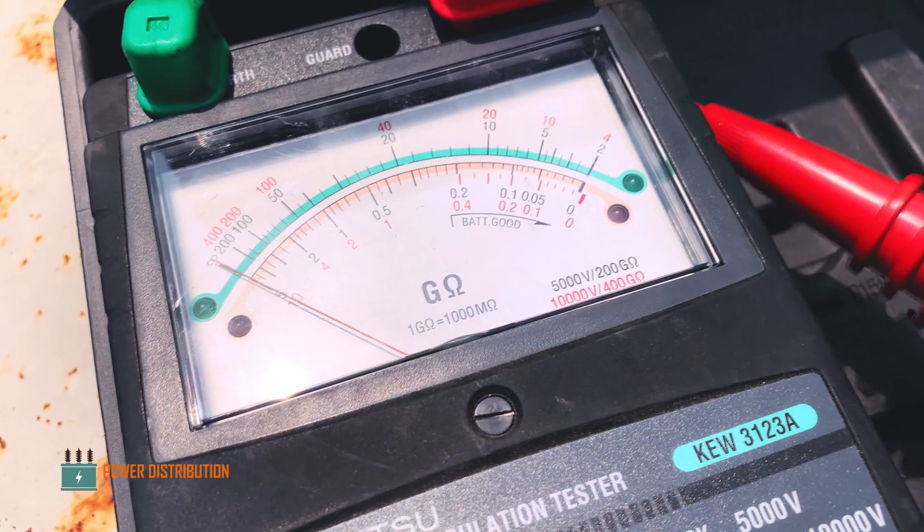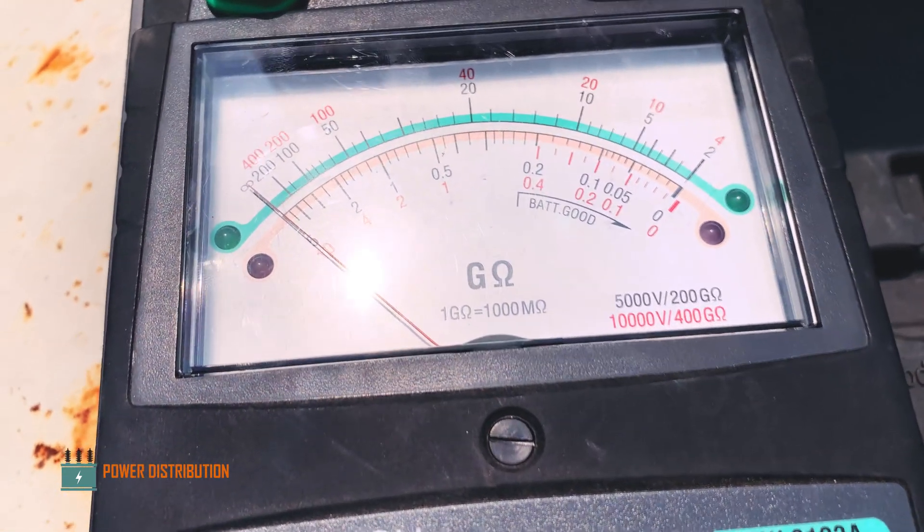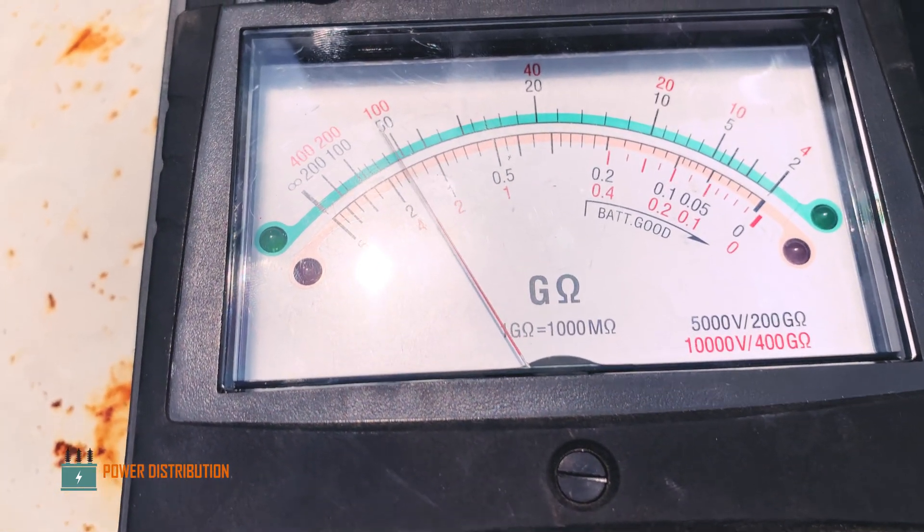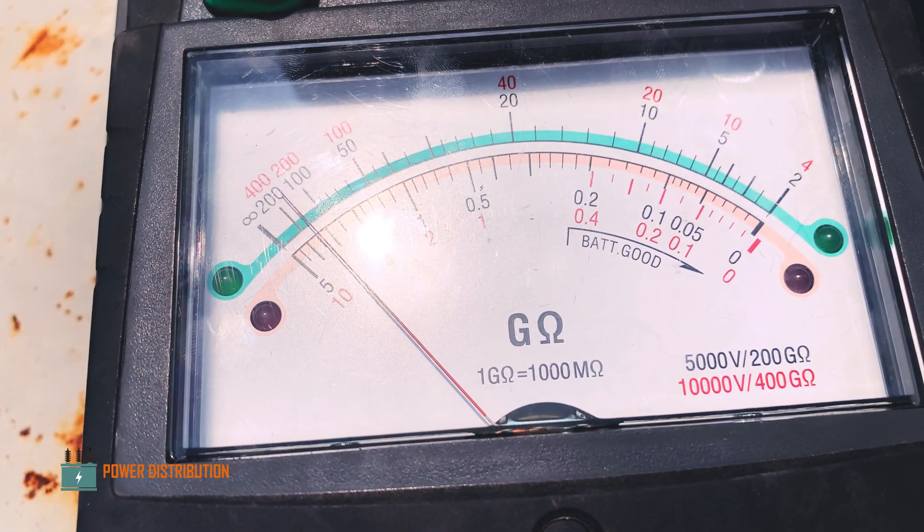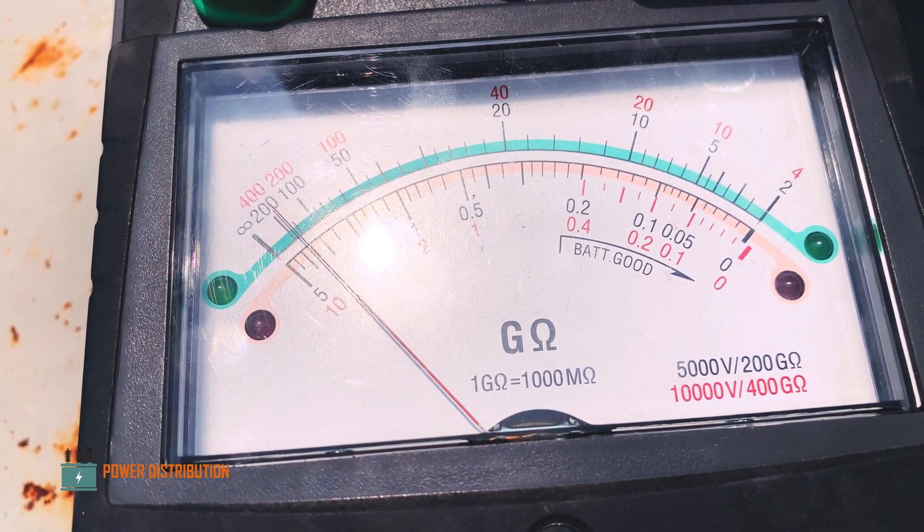We put the live probe on the primary. As you can see, there is some reading, which means the secondary winding is pretty much good or intact.